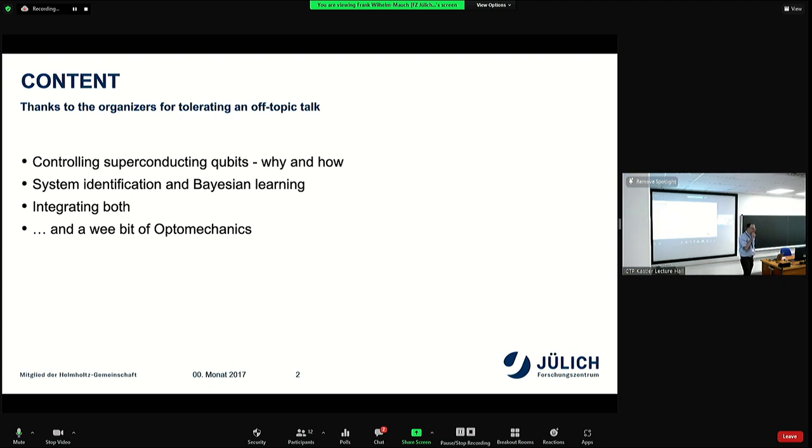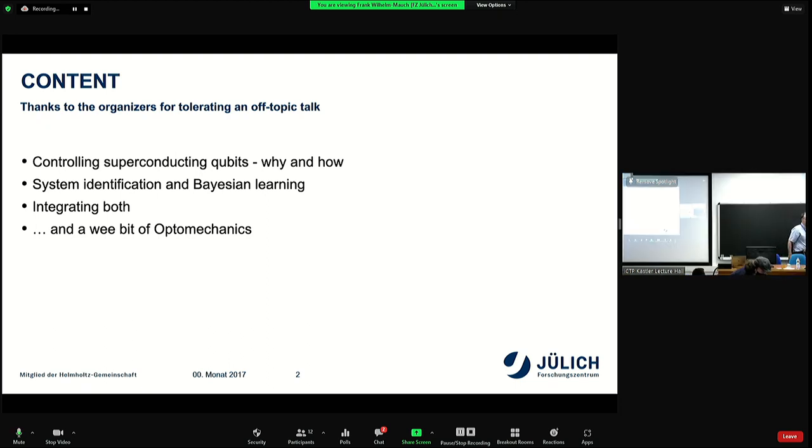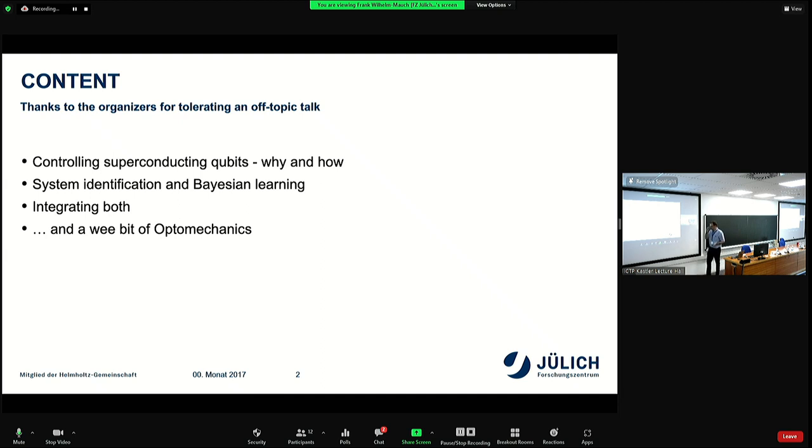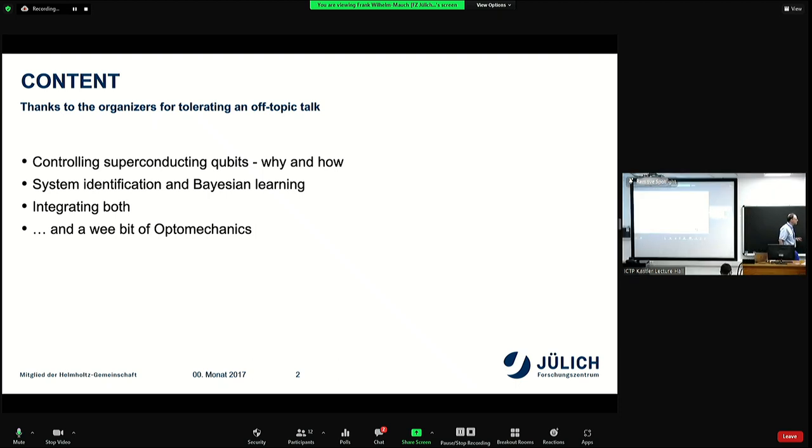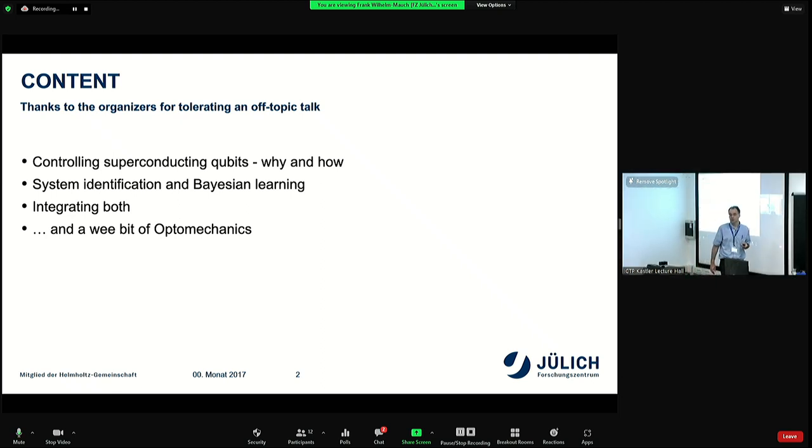I would like to thank the organizers for inviting me to talk about controlling microwave qubits and maybe in the end a bit of optomechanics. I would also like to thank the organizers for tolerating an off-topic talk. I will talk about a key ingredient for this, which is system identification by Bayesian learning, also known as spectroscopy on steroids. And then how with both things together, you can actually make calibrating your qubits a lot faster and more efficient and more precise, which specifically is important when you scale up.